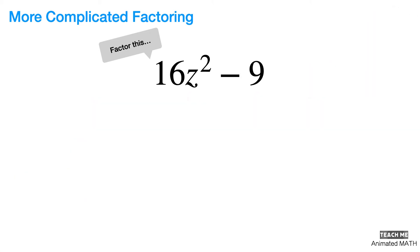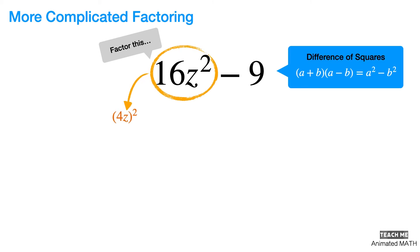This is where the polynomial special case products come in. And in this example, that special case product is called the difference of two squares. This is because 16z squared is equal to 4z squared and 9 is equal to 3 squared. And we now have 4z squared minus 3 squared. This polynomial expression can now be factored using the difference of two squares pattern. But with a equal to 4z and b equal to 3.